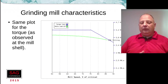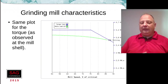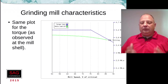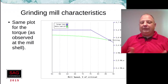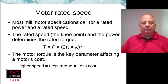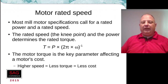At lower speeds you have constant torque but not constant power available, up until you get to some specified design speed — in this case 75% of critical — after which the motor can no longer generate full torque. The choice of this rated speed is critical when writing a specification to buy a grinding mill.